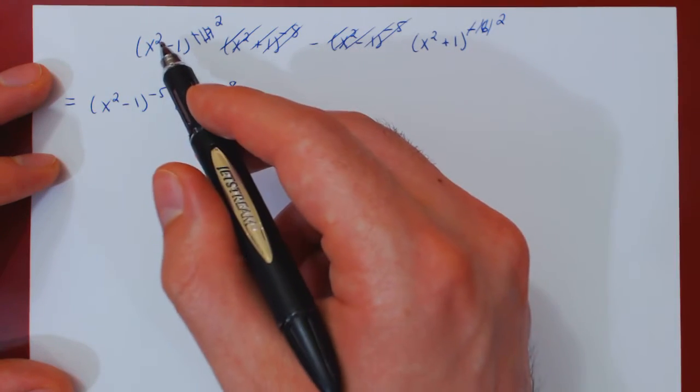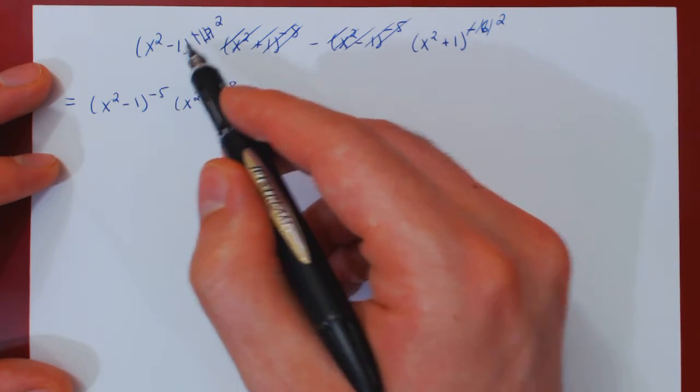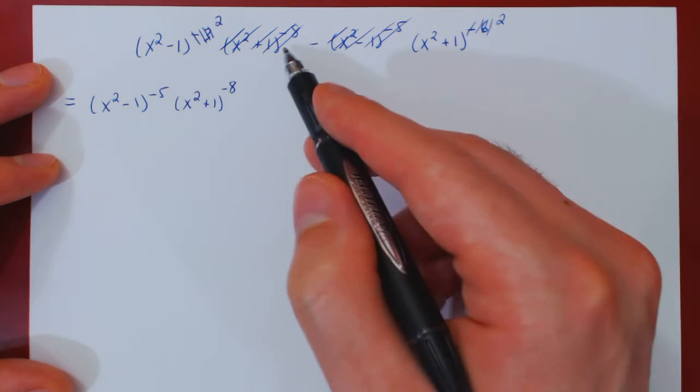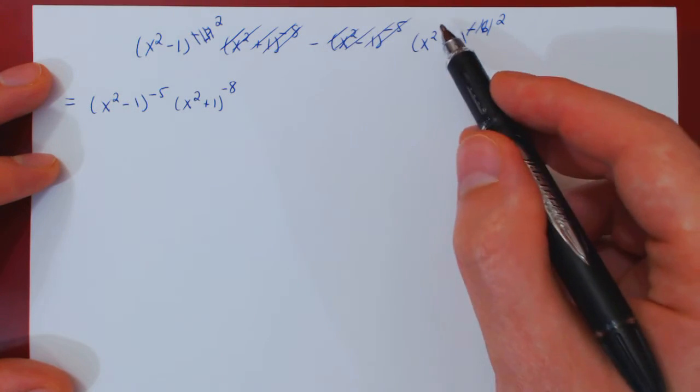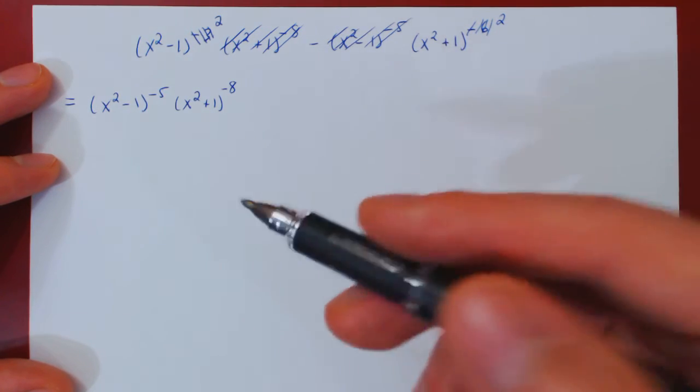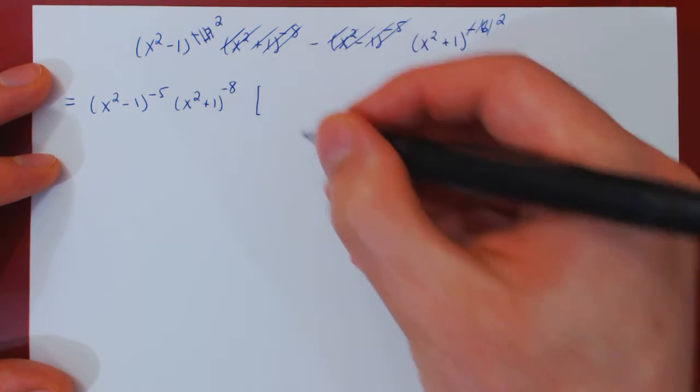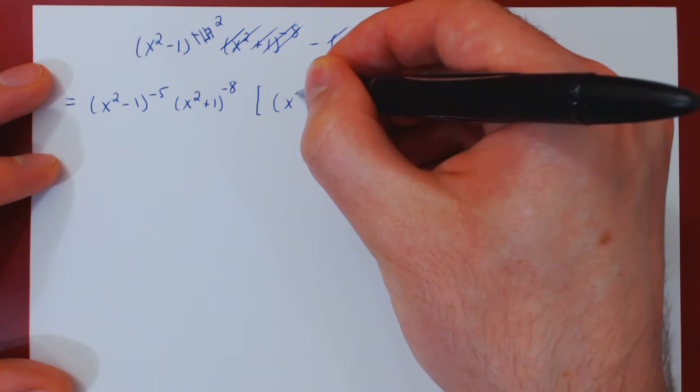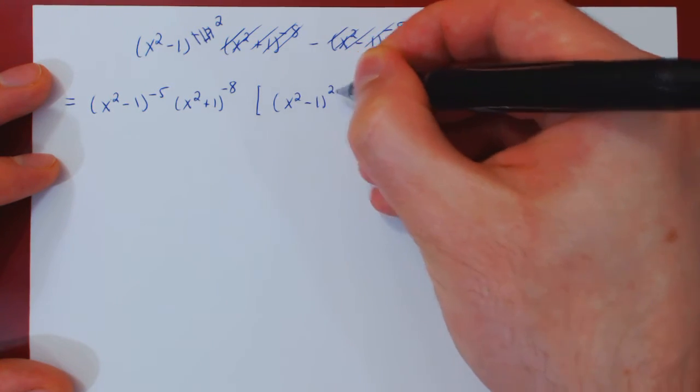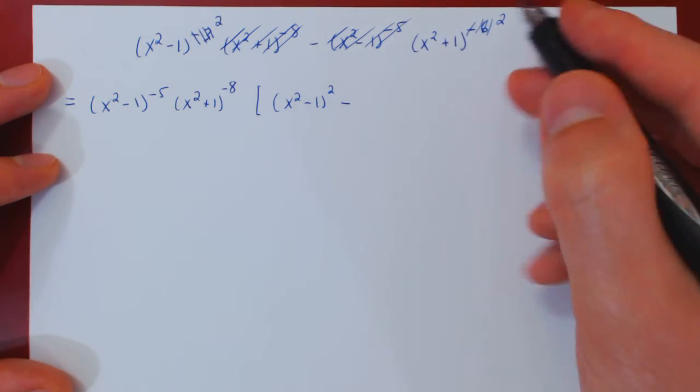Now if you look at what remains, we have an x squared minus 1 squared in the first term, and an x squared plus 1 squared in the second. There are no more any common factors, we can open our bracket. So we have x squared minus 1 squared minus x squared plus 1 squared.